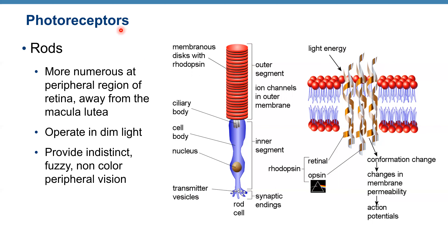Rods are more numerous at the peripheral region of the retina, away from the macula lutea. Rods operate in dim light and provide indistinct, fuzzy, non-color peripheral vision. Looking at the structure of a rod, it has an inner segment and an outer segment. In the inner segment you have the nucleus and synaptic endings; in the outer segment you have membranous discs with rhodopsin.